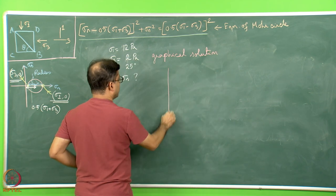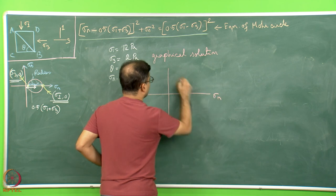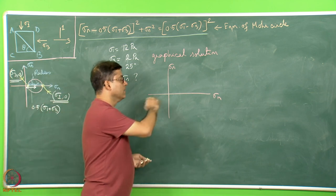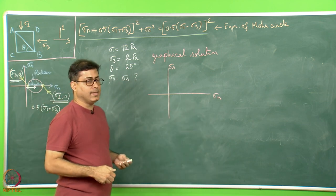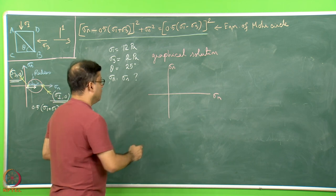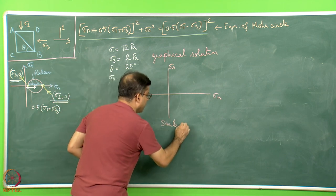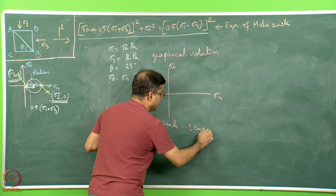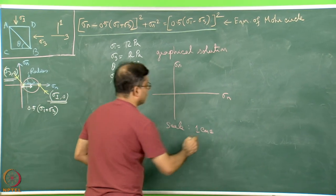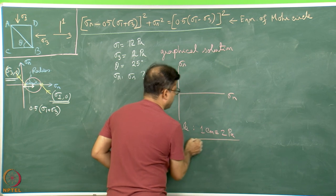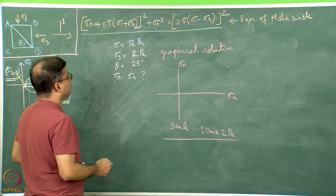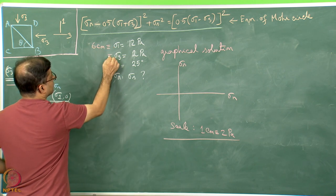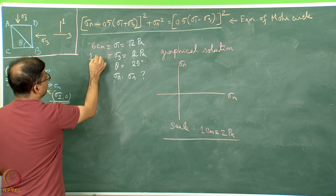On the graph sheet, you decide the sigma N and sigma S axes — they have to be perpendicular. Sigma N has to be the x-axis and sigma S has to be the y-axis, always. Now we define a scale: here 1 centimeter is equivalent to 2 Pascal. Therefore, sigma 1 will be equivalent to 6 centimeters and sigma 3 will be equivalent to 1 centimeter.